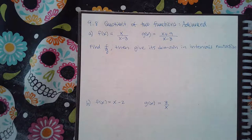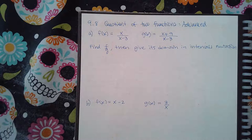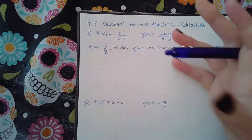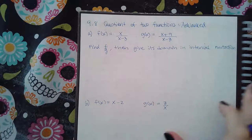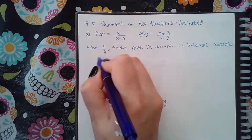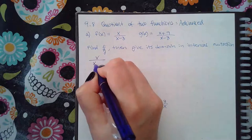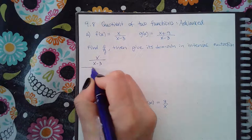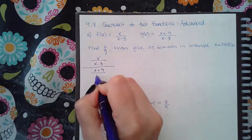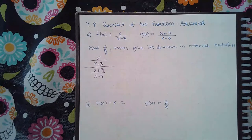Here we have 9.8, quotient of two functions — advanced. They want me to find f over g, then give its domain in interval notation. There are three different examples. For the first one, f over g means to take the f function, which is 1/(x−3), and place it over the g function, which is (x+9)/(x−3).